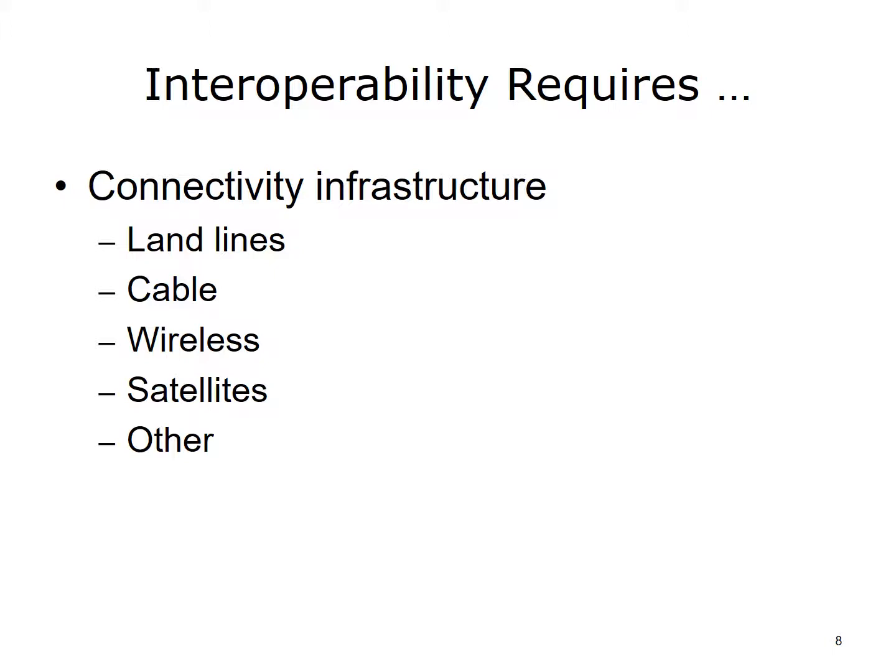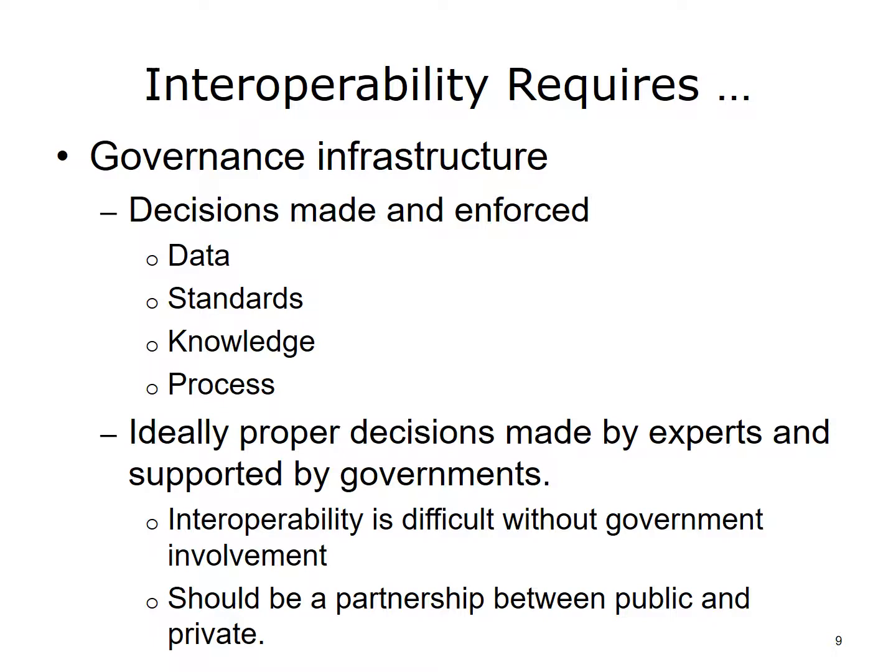Since many parties are involved, there must be some governance infrastructure. Decisions involving standards, knowledge, and process must be made and enforced. As we will see in other parts of this lecture, someone has to select the standards and methods that will be used. Decisions necessary for interoperability relate to standards, data, knowledge, and process. Ideally, these decisions will be made by experts who understand the technology and the requirements.